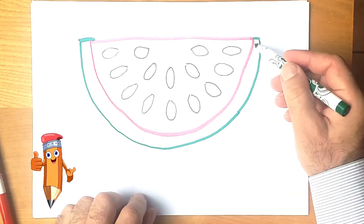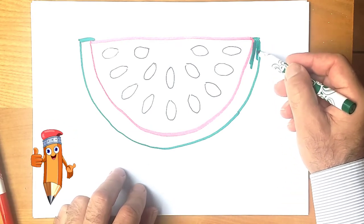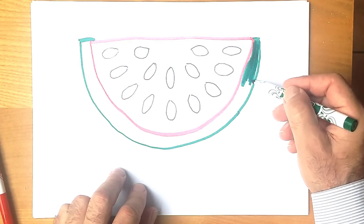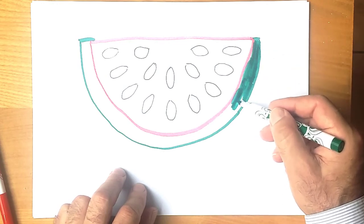Let's draw a watermelon peel in light green color.